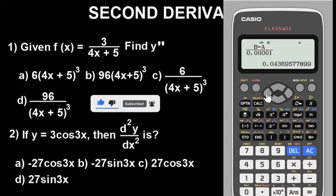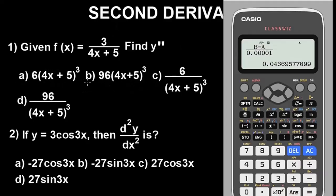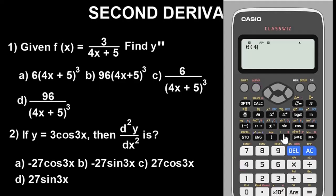To check the correct option, simplify each of the options. Whichever one gives you 0.043 will be the answer. After finding the second derivative, compute (B minus A) divided by the constant, and you get 0.043. Let's check option A: we have 6 over (4x + 5) raised to the power 3 — press Alpha X. Let's evaluate this.